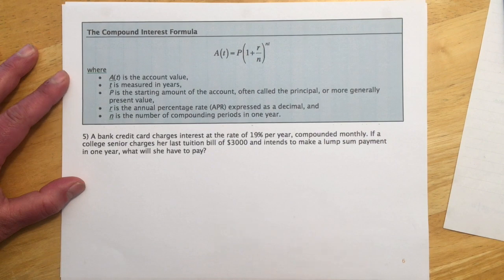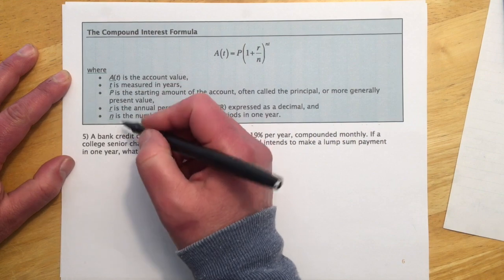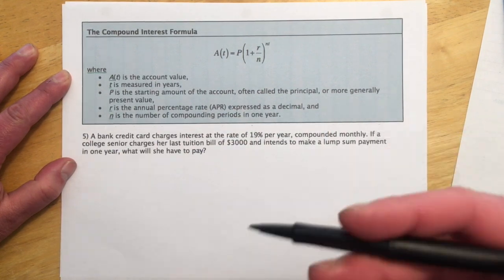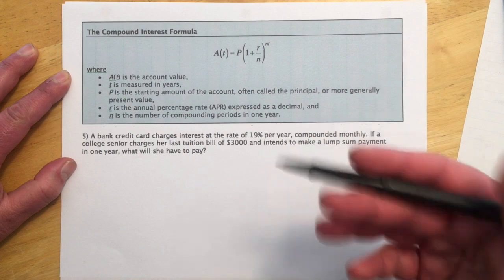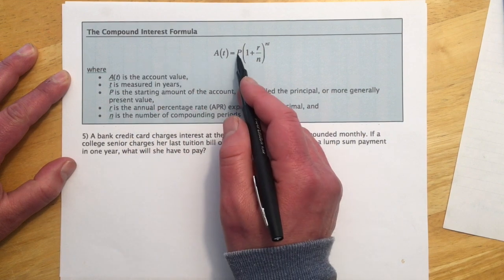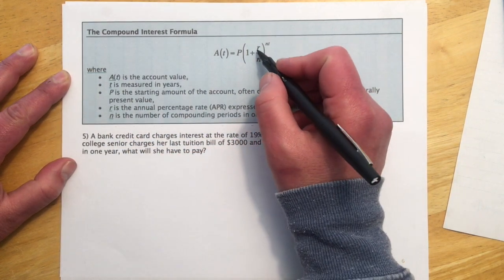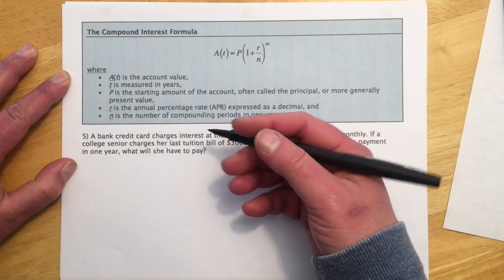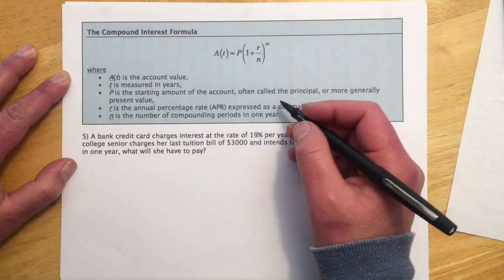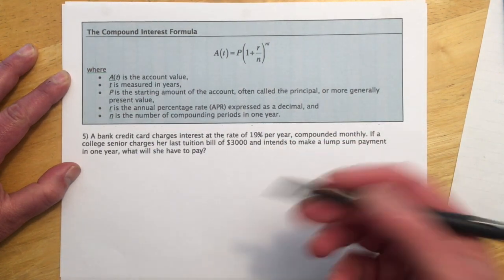So then the next couple of things up are financial formulas. So this is our compound interest formula. I'll just kind of run through what all the variables are fairly quickly. A is the account value, so that's like we invest some money and then it sits there for a while and gets interest. So that's the amount of money we have after some time, T later. T is time measured in years. P right here is the principal, so it's how much we put in originally. R is the annual percentage rate. You want to do that as a decimal, so you get 6% interest or whatever. That would be R. And then N is the number of compounding periods per year. So if the money is compounded quarterly, then N is 4. If it was compounded monthly, N would be 12, and so forth.